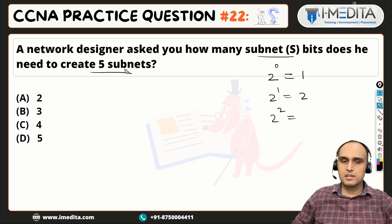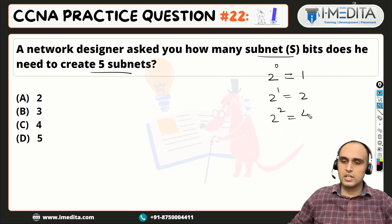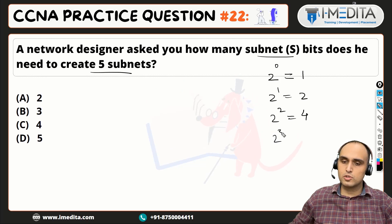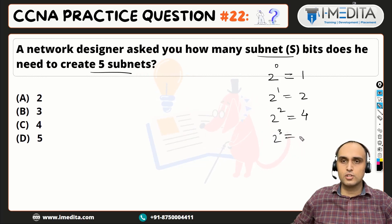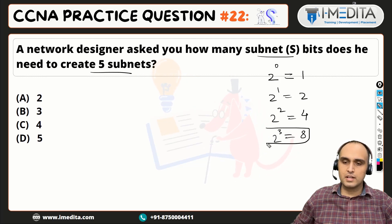We need to go up to enough subnets. 2 raised to the power of 2 is 4 — that is 2 multiplied by 2. So 2 raised to the power of 3 is 2 into 2 into 2, which is 8. And here we need to see how many subnets will be satisfied.